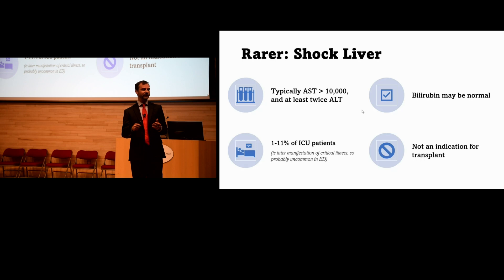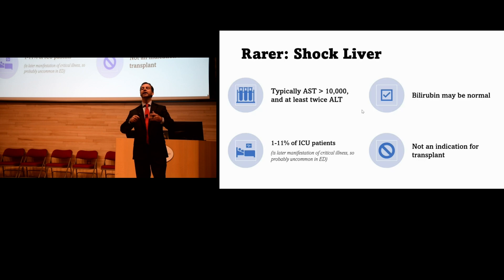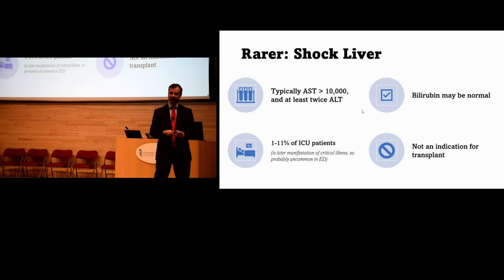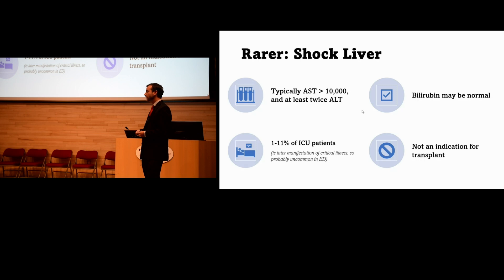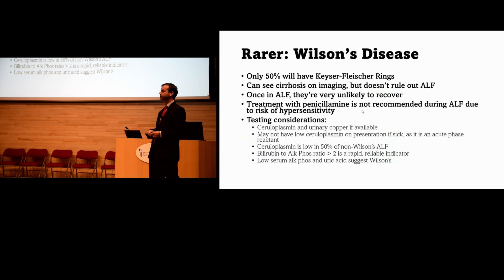Shock liver — ischemic hepatitis — is rare in the ED but not uncommon in the ICU; it's typically a later presentation of critical illness. Expect a raging transaminitis in the tens of thousands for AST and ALT, but with a normal or only mildly elevated bilirubin. This can suggest shock liver. About 11% of ICU patients develop shock liver. Unfortunately, as an extrahepatic cause of liver failure, these patients are typically not transplant candidates.